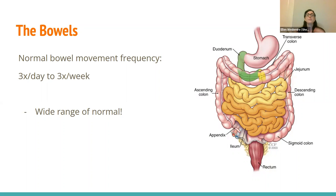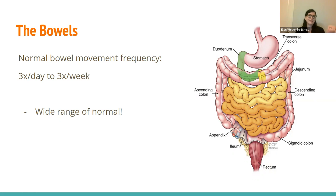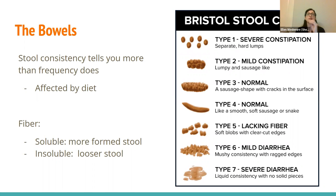A lot of people think that once a day is the average for bowel movements, but that's not true. You can be completely regular if you move your bowels three times a day or three times a week — everyone is a little different, based on what you're eating, your gut flora, how peristalsis is working, your age, and your health. So instead of comparing yourself to someone else, it's more important to look at your stool consistency, which is very much affected by your diet. Having more or less fiber is definitely going to change things.